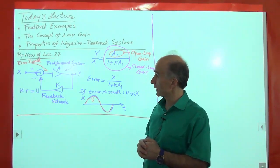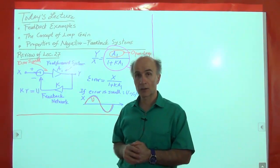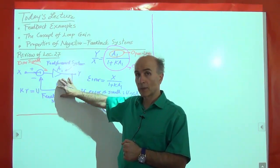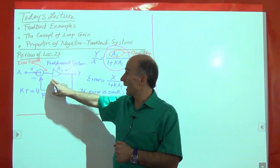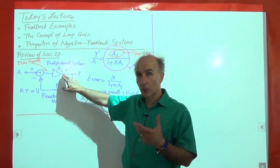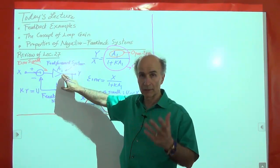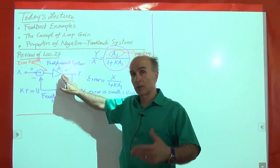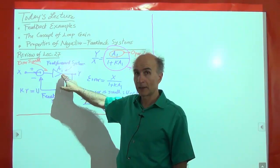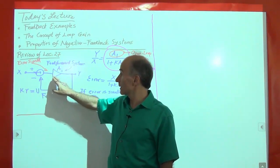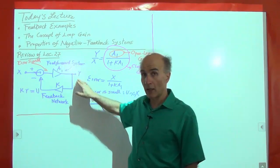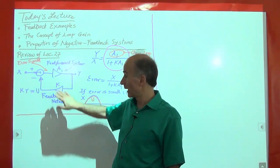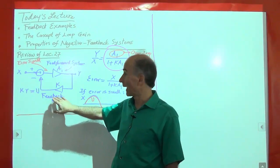Let's look at what we covered last time. We introduced the general negative feedback system shown here on the left. We start out with an amplifier or some other system that is poorly controlled — a wild, untamed system. The voltage gain may not be accurate, or the speed of the car may not be accurate. We decided to embed this feed-forward system in an overall feedback loop consisting of a feedback network and a subtractor.